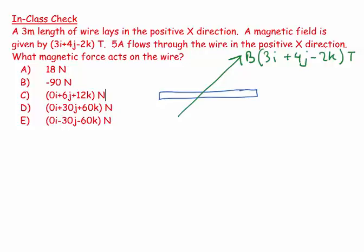And it says the current of 5 amps flows through the wire in the positive x direction. So here's my current, 5 amps, and it asks me to find my magnetic force. What's the force on the wire?